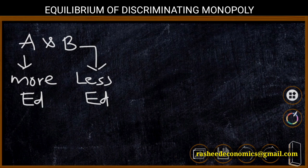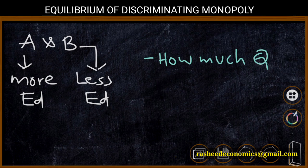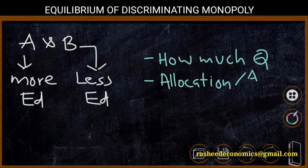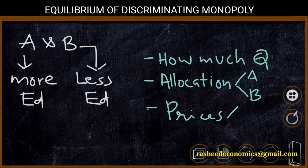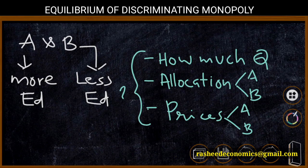The monopolist needs to make certain decisions. The first and most important decision is how much output is to be produced. The second is the allocation of this output to different markets, market A and market B — that is, how much of output Q is to be allocated to each. The third question is what price is to be charged from market A and market B. These are the three basic questions faced by a discriminating monopolist.